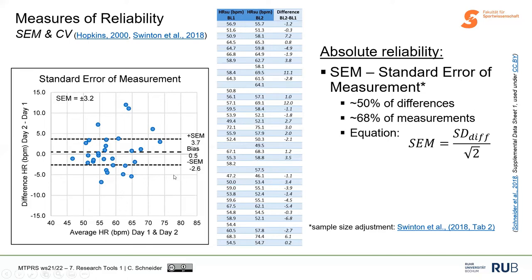Approximately two-thirds of measurements from a single measure fall within the SEM. So on a day-to-day basis, I'd expect about two-thirds of measures to vary within 3 bpm. To calculate SEM: take the standard deviation of the differences and divide by the square root of 2. We divide by √2 because measurement error occurs on both day one and day two; the difference incorporates error from both measurements, so we account for this by dividing.